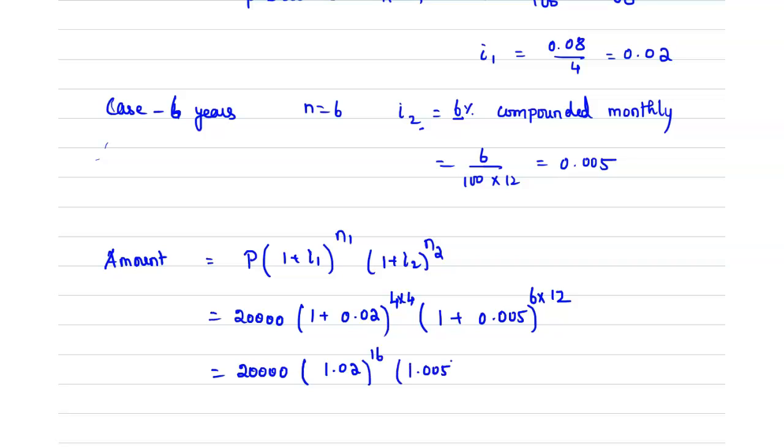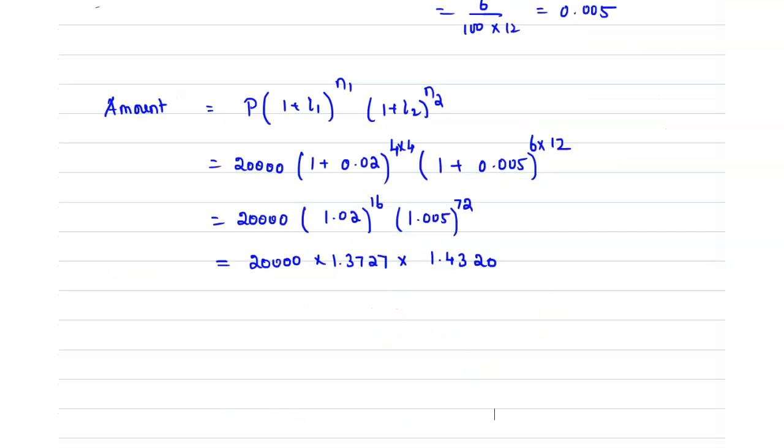So which is equal to 20,000 multiplied by (1.02) to the power 16 multiplied by (1.005) to the power 72. Upon simplification, we will get the values for this as 1.02 power 16 is 1.3727 and 1.005 power 72 is 1.4320.